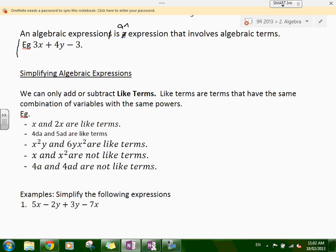x squared y and 6yx squared are like terms. Again, the order is different, but you've got an x squared and you've got a y multiplied together, and therefore they're like terms.